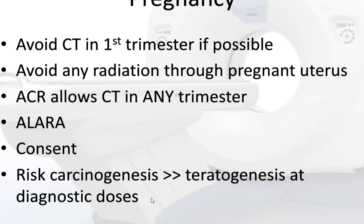Regarding pregnancy, we try to avoid CT in the first trimester if possible. ACR allows scanning in any trimester — we can do chest CT or even abdomen and pelvis CT if absolutely necessary, such as in trauma, life-threatening situations, or cancer. We try to protect the developing fetus in the first trimester. Ultrasound or MRI are safer first alternatives. We must remember the ALARA concept, and risk of carcinogenesis is much greater than the risk of teratogenesis at diagnostic doses.